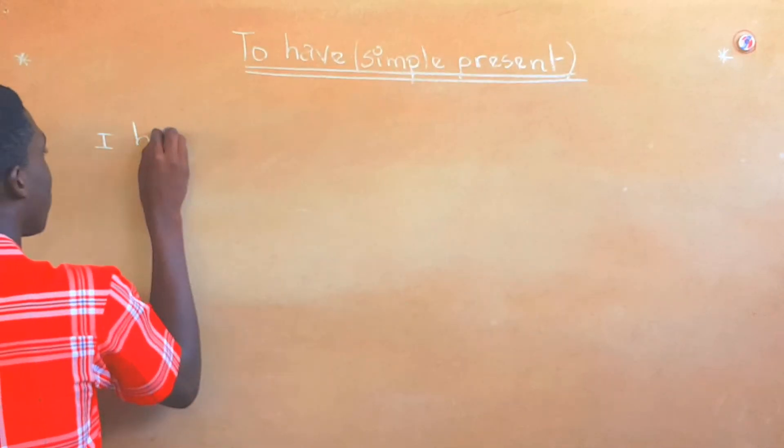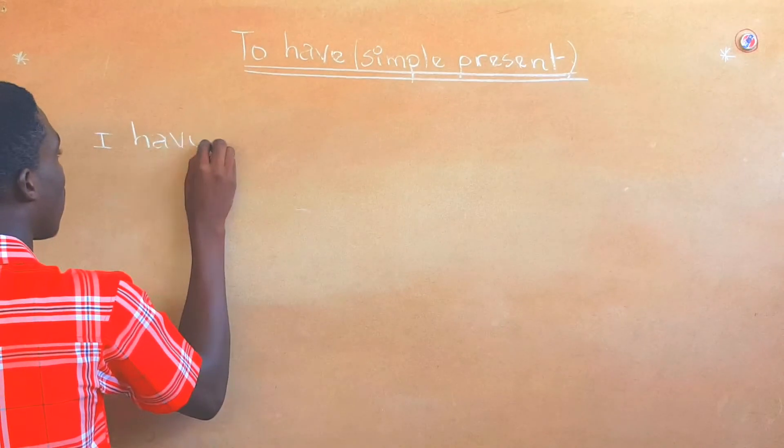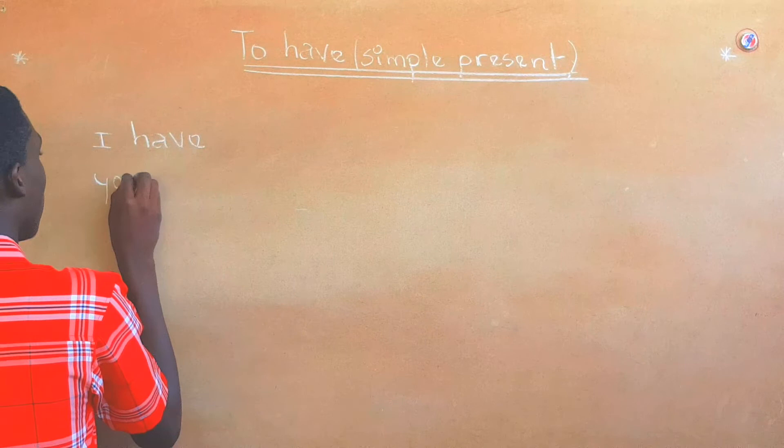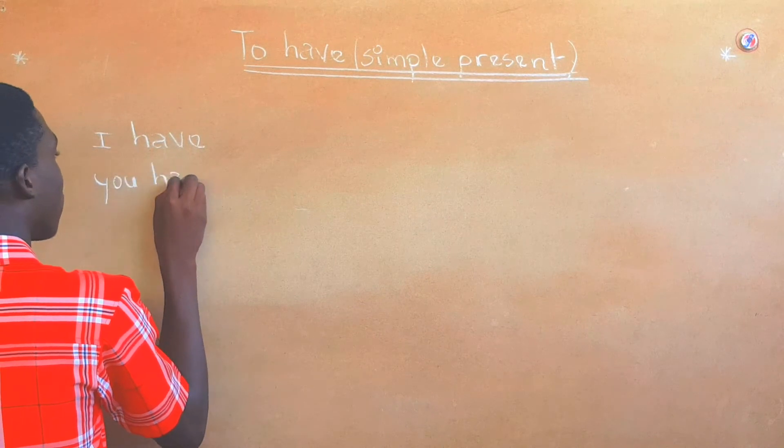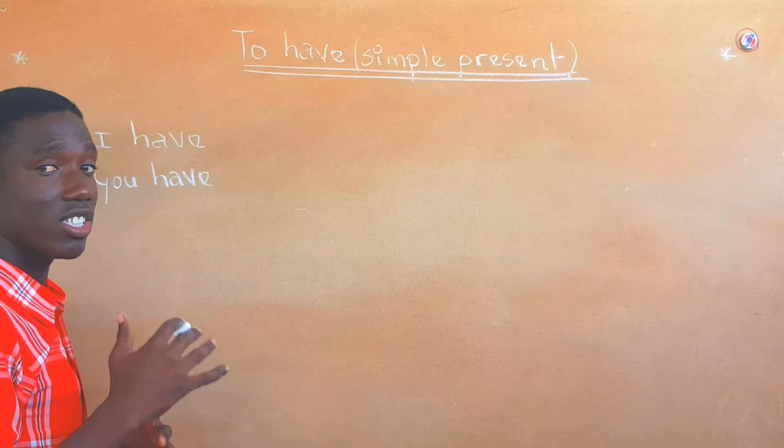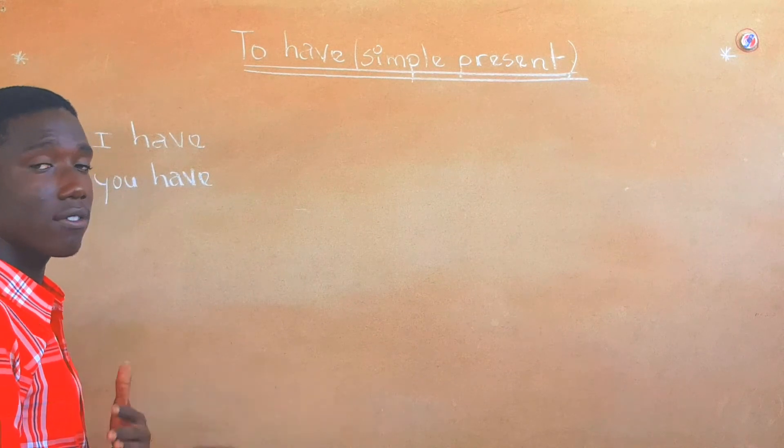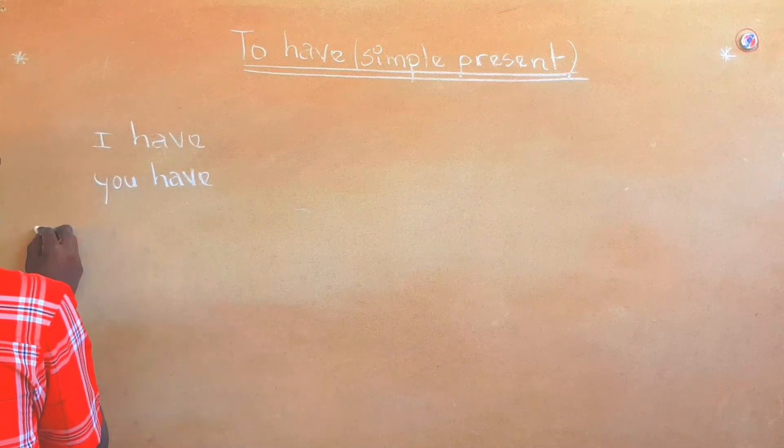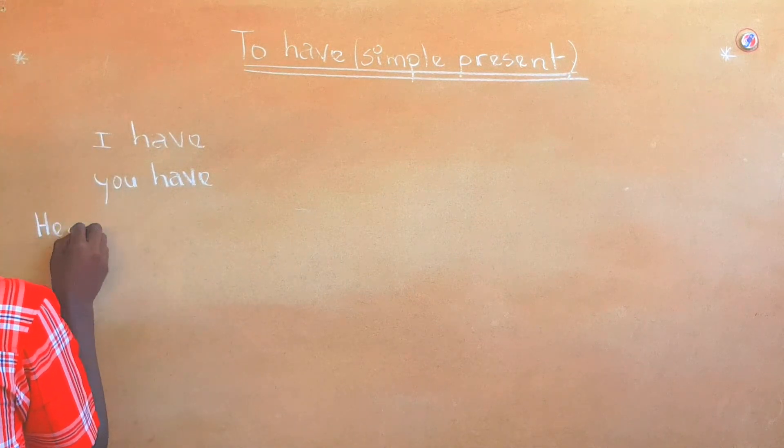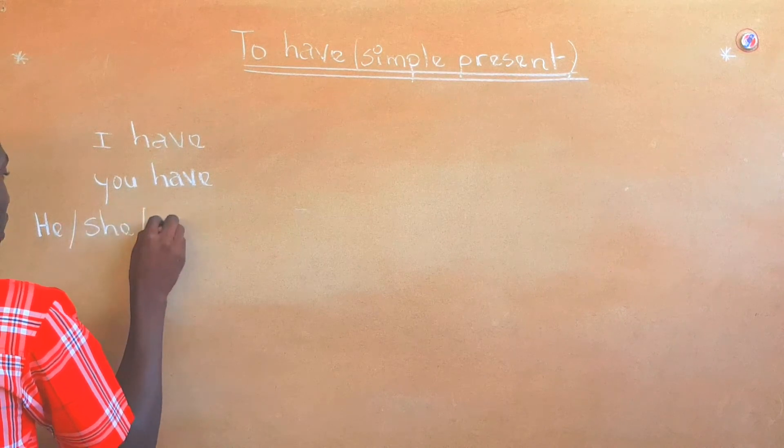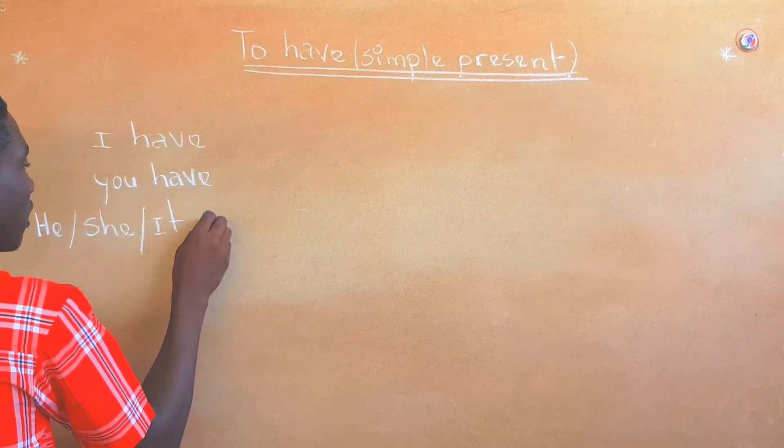I have, you have. For he, she and it, we have to change the verb to has. He has, she has, it has.